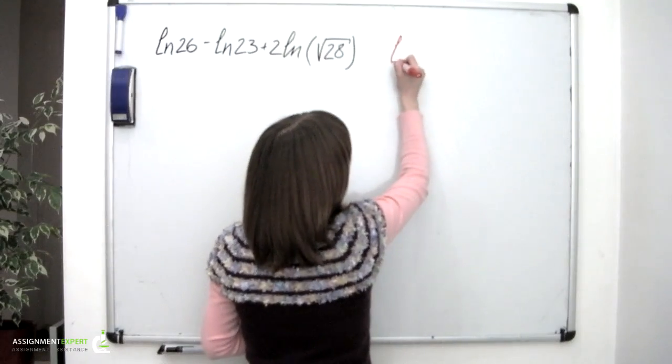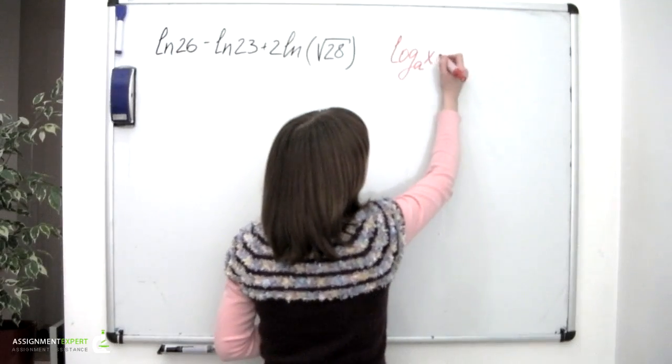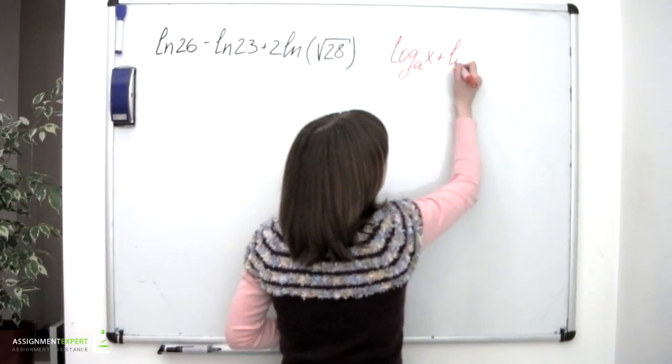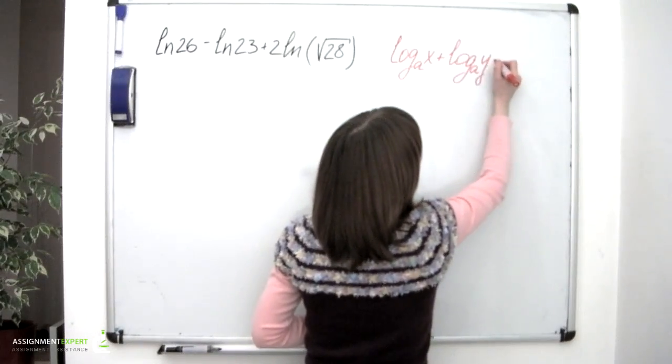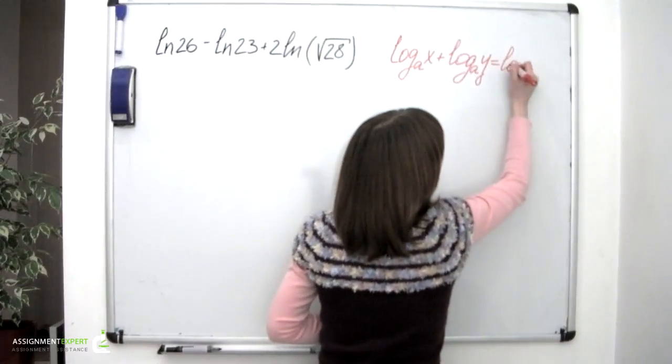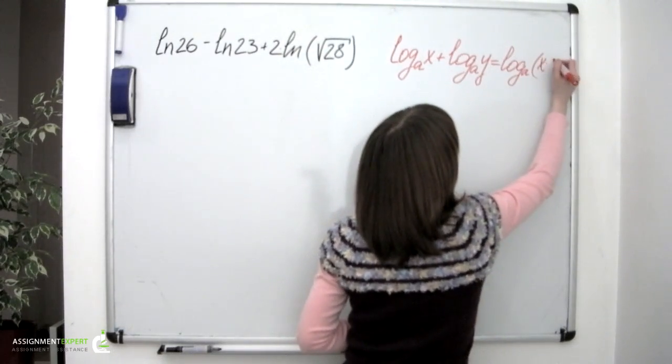The first one is logarithm base a of x plus logarithm base a of y is equal to logarithm base a of x times y.